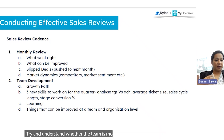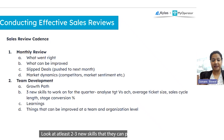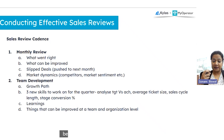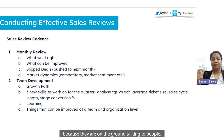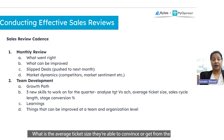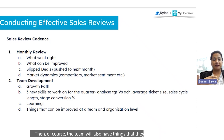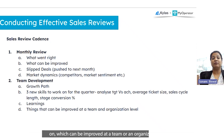Try to understand whether the team is moving on the growth path they have aligned to. Look at at least two to three new skills they can pick up for the quarter. Analyze their target versus achievement ratio and what the average ticket size they're able to close is. The team will also have feedback on things that can be improved at a team or organization level.